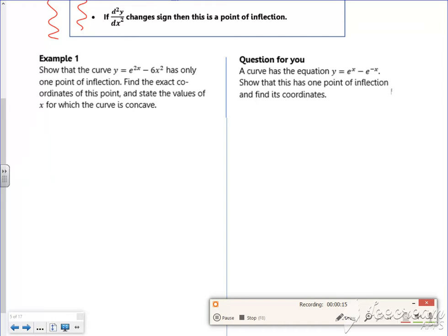So I want to find, so the first thing I want to do is find d²y by dx². So if I differentiate it, I've got dy by dx is 2e^(2x) minus 12x, and then differentiate it again, so it's going to be 4e^(2x) minus 12.